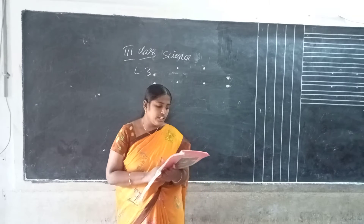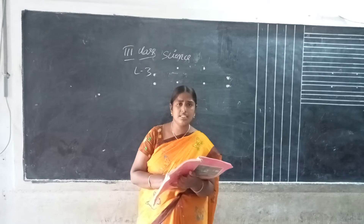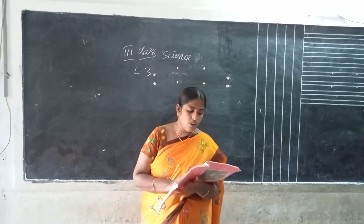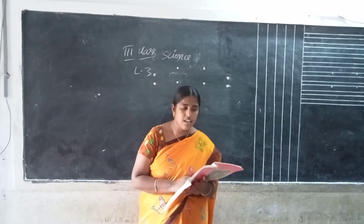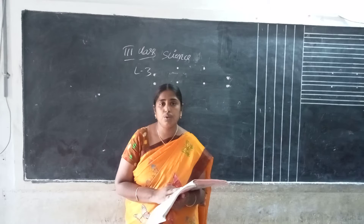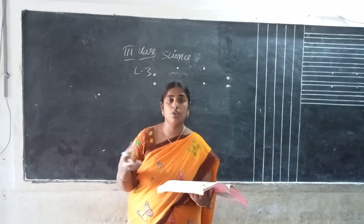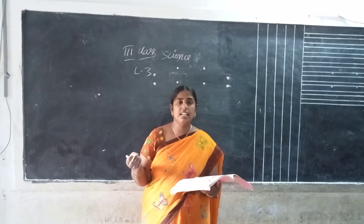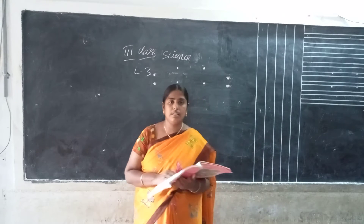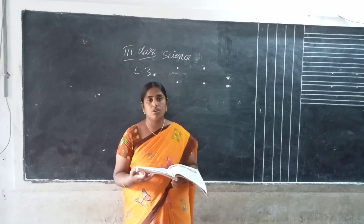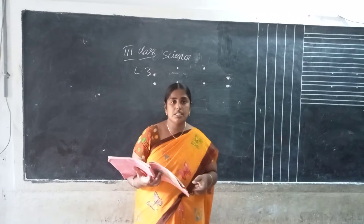Loam is a mix of sand and clay. It can hold both water and air. Loam soil also has humus in it. Humus comes from dead animals, dead plants, and so on. Most plants grow very well in loam soil.